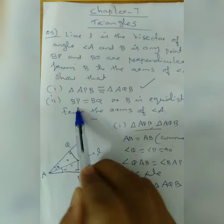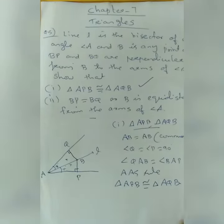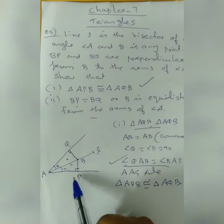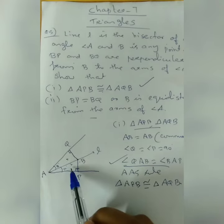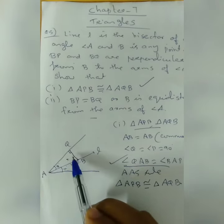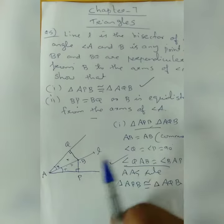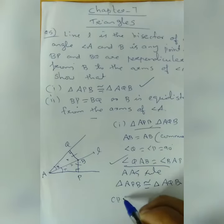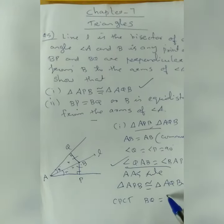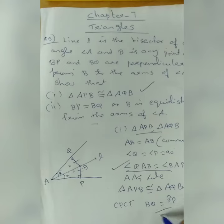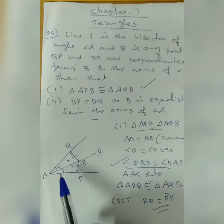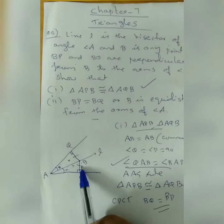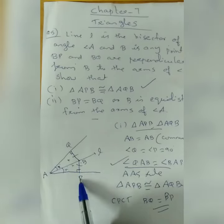For the second question, we prove BP is equal to BQ. Since angle QAB is equal to angle BAP and the two triangles are congruent, the sides opposite to the equal angles are equal. Therefore, by CPCT, BQ is equal to BP.